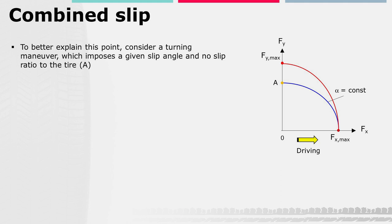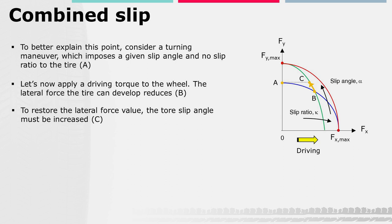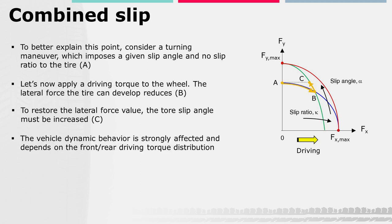To better explain this concept, consider a turning maneuver which imposes a given slip angle and no slip ratio to the tire — point A. If a driving torque is applied, the slip ratio increases and a longitudinal force is developed. Consequently, the lateral force the tire can develop reduces to point B. To restore the value of the lateral force, the tire slip angle must be increased to point C. Clearly, this strongly affects the vehicle turning dynamics, which presents different behavior depending on the front-rear driving torque distribution.